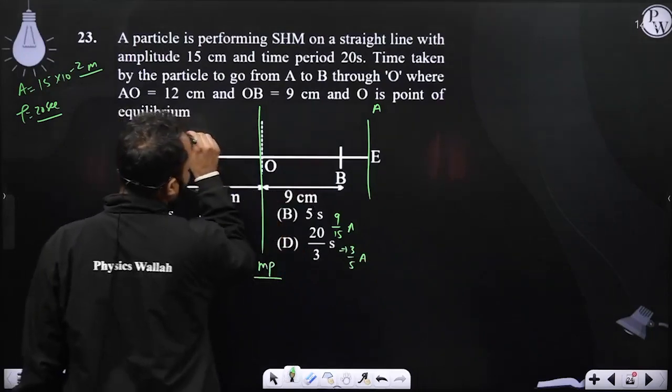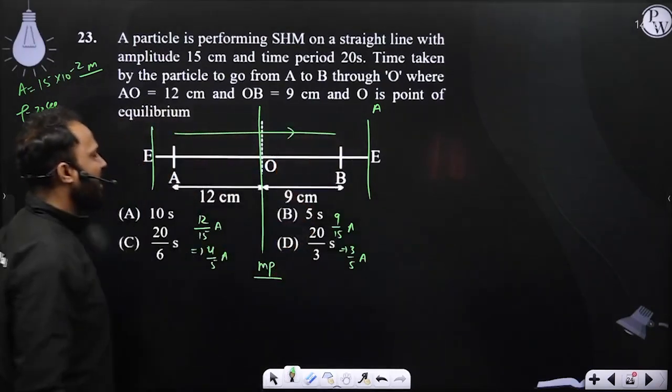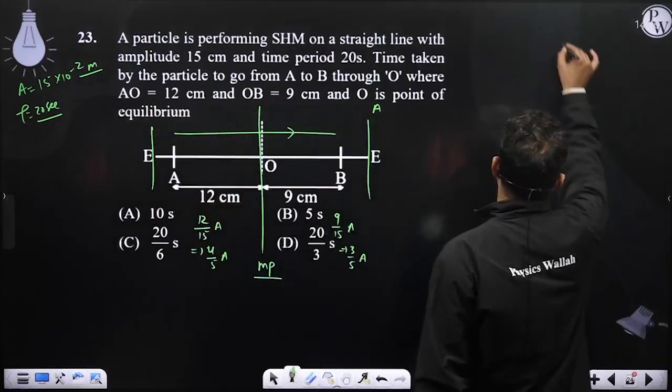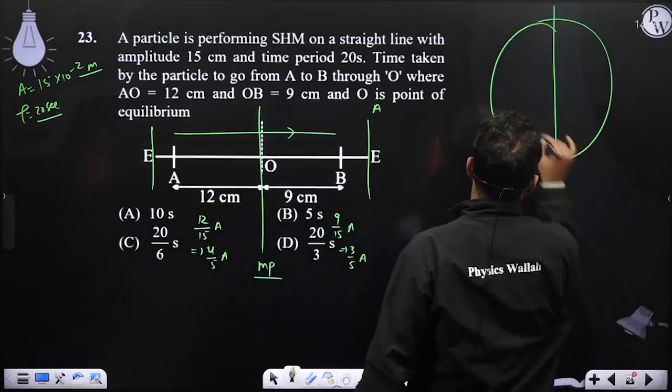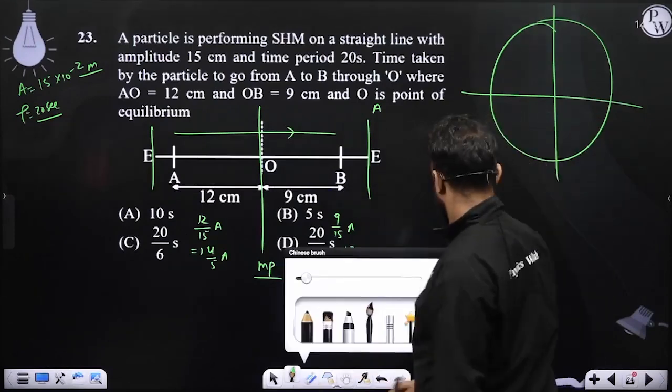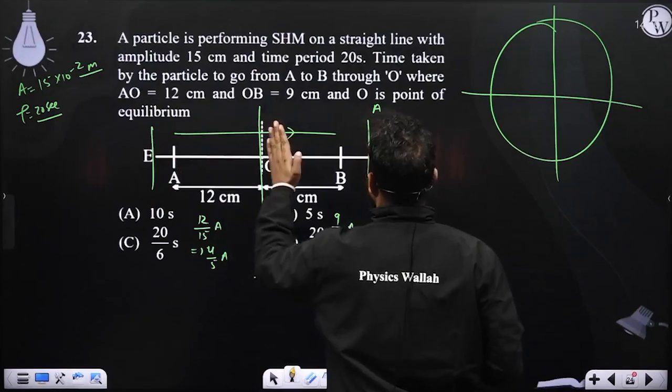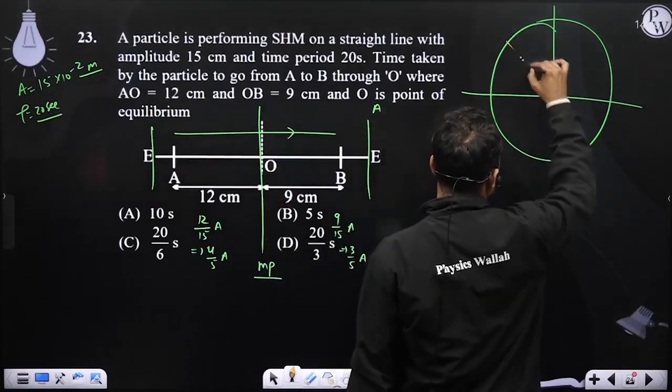Now the particle wants to go from A to B via O. If I make its phasor, we will see that particle is going from negative extreme to mean position, meaning particle A is somewhere here, or A position is somewhere here.